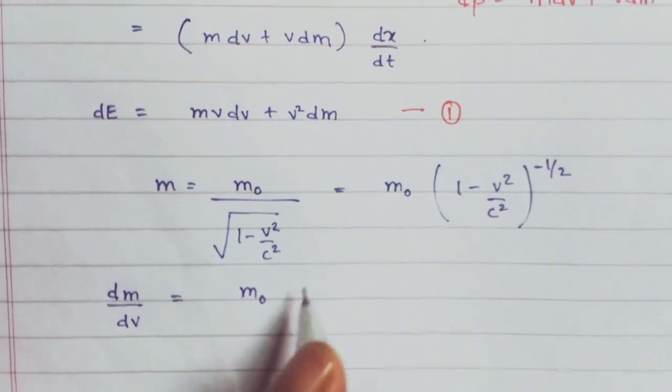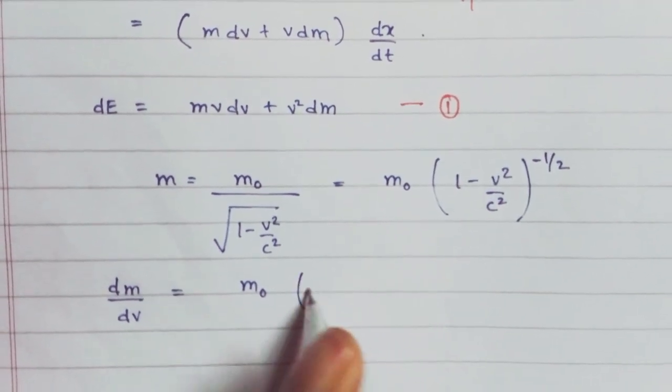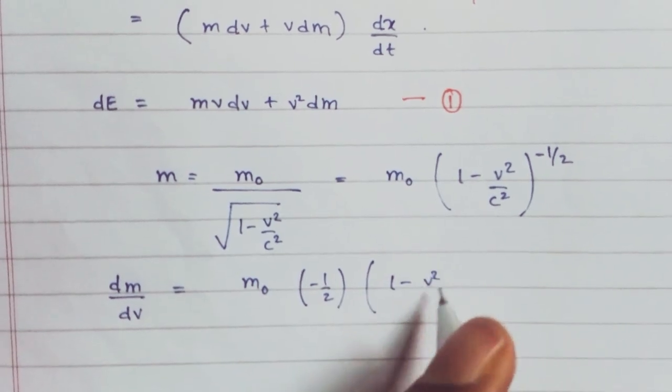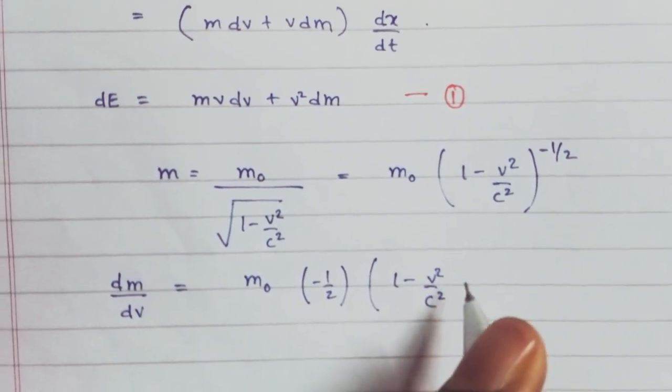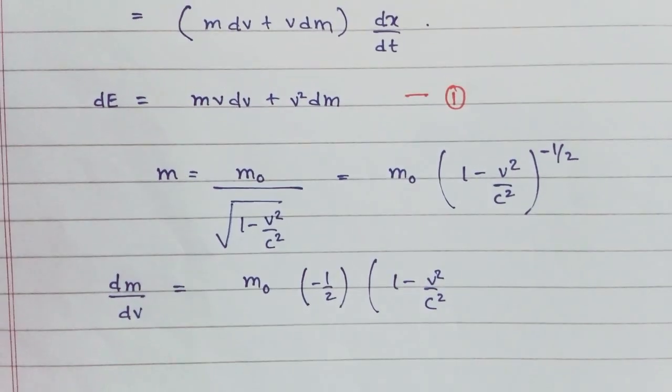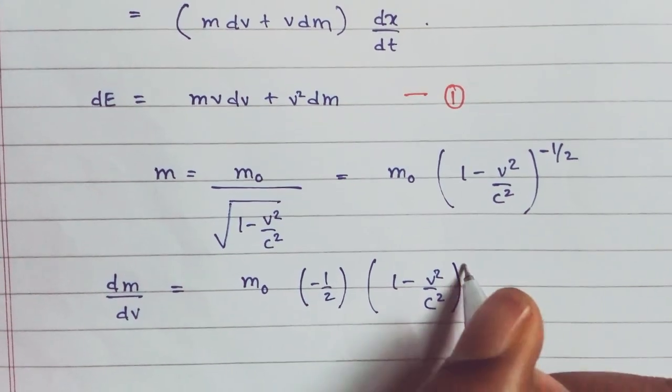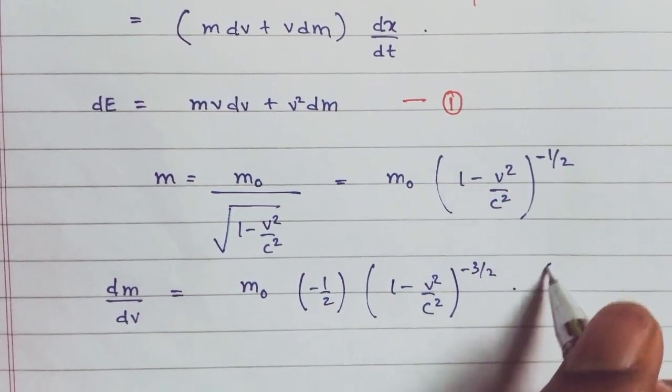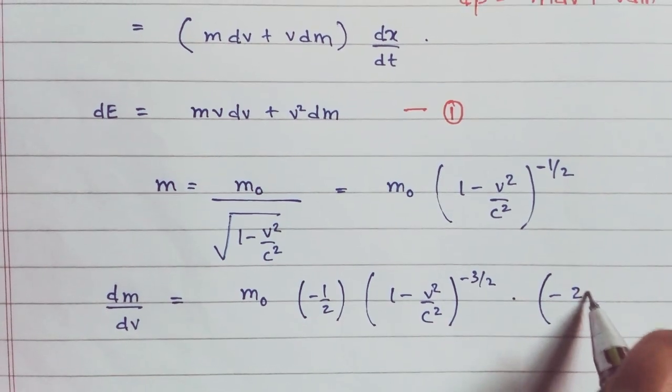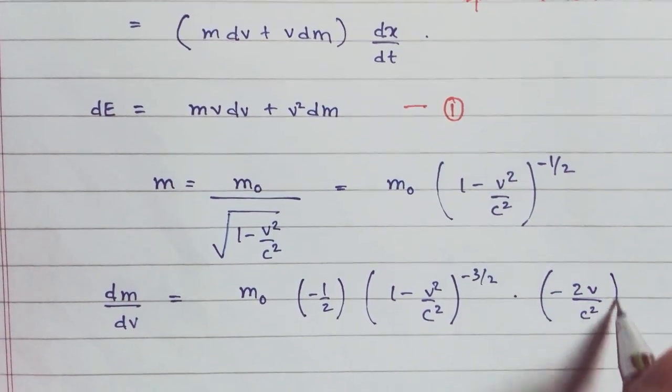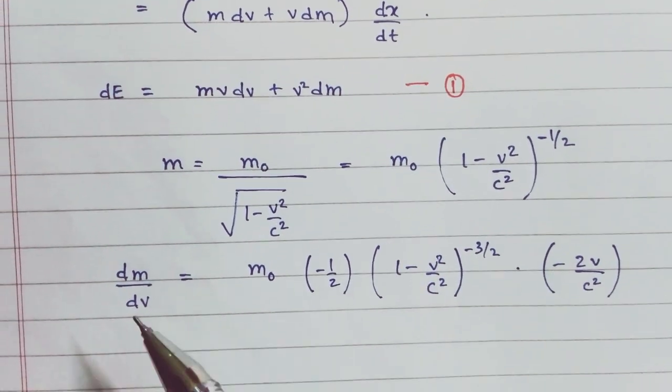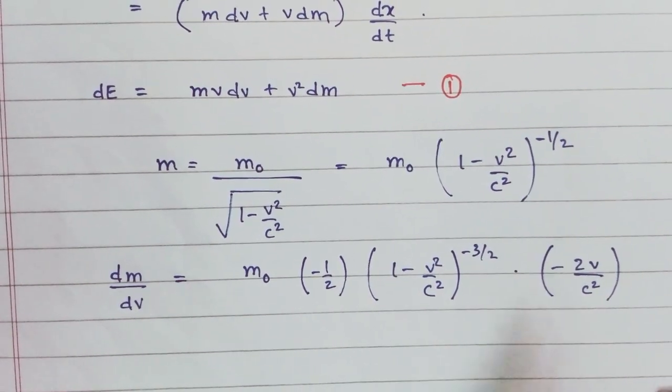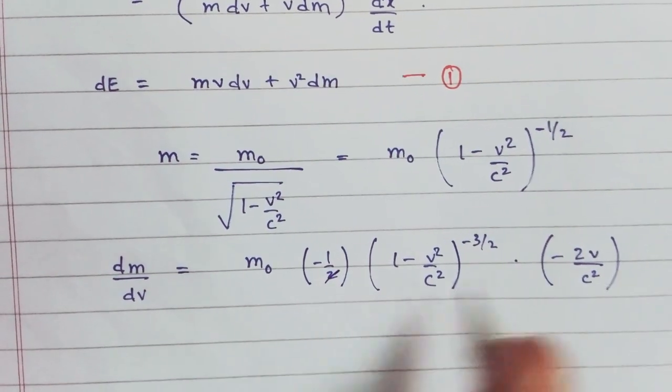Apply the chain rule. We get minus half times 1 minus V squared by C squared to the power minus three by two. When we differentiate this, we get minus 2V by C squared. We are differentiating with respect to velocity, so we get 2V over C squared. The 2s cancel.